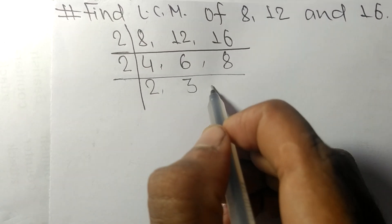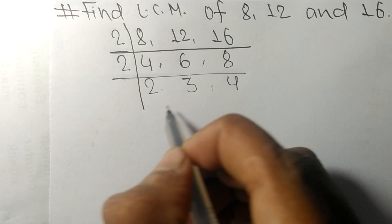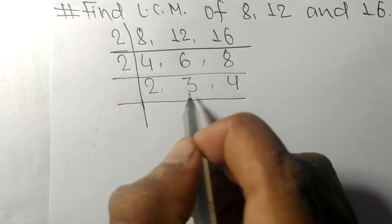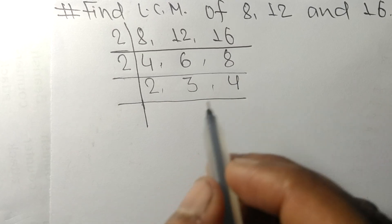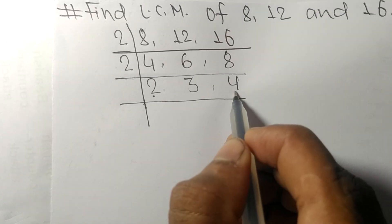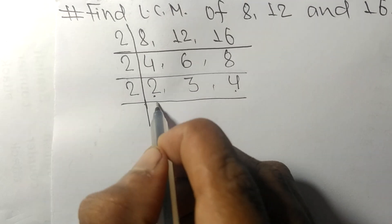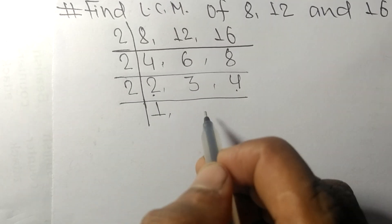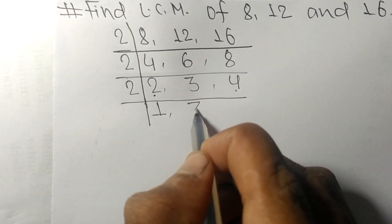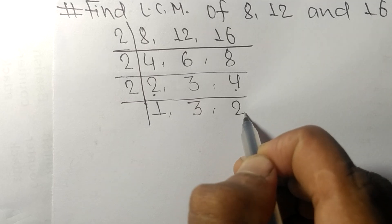Now we got 2, 3, and 4. Among them, 2 and 4 are exactly divisible by 2. 2 times 1 means 2, 3 is not divisible so it stays the same, 2 times 2 means 4.